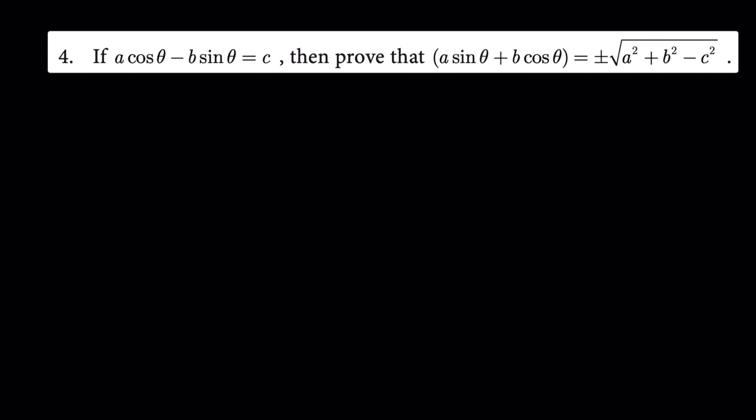If a cosθ minus b sinθ is equal to c, then prove that a sinθ plus b cosθ is equal to plus or minus square root of a squared plus b squared minus c squared.